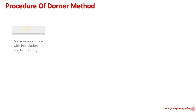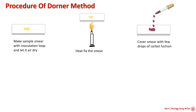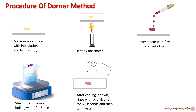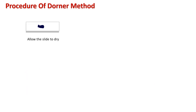Procedure for Dorner's method: make a smear on a clean glass slide, allow the slide to dry, and then heat-fix. Cover the smear with carbolfuchsin and heat the slide over boiling water for about five minutes. After cooling, wash the slide with acid alcohol for about a minute to decolorize, then rinse with tap water. Add a drop of nigrosin to the smear to form a thin film, allow the slide to dry, and observe under the microscope using immersion oil.